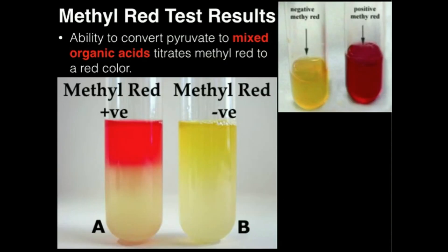Let's take a look at the specific results for the methyl red test. Fairly straightforward — if it's yellow like this, that is a negative methyl red test, meaning these bacteria do not have the ability to convert pyruvate to mixed organic acids. Over here, we clearly see this is red — same thing here, more diffuse, but the principle is the same. A red result means that these bacteria do have the ability to convert pyruvate into mixed organic acids.